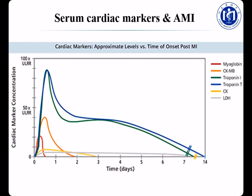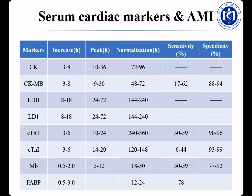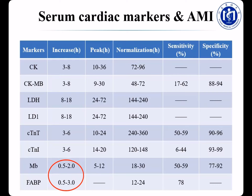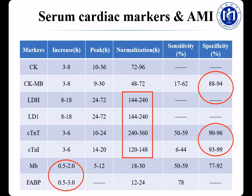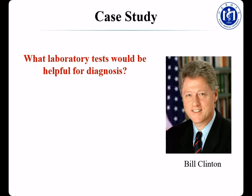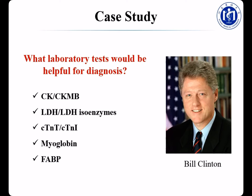For early diagnosis, markers that increase rapidly are used. From the figure, myoglobin rises first, so it can be used for early diagnosis of AMI. For late diagnosis, markers that persist longest are used — these are LDH and troponin T/I. This table lists the time for each marker to increase, reach the peak, and normalize. Myoglobin and FABP are the two markers that increase most rapidly, so they are used for early diagnosis. LDH and troponin T/I last the longest, so they can be used for late diagnosis. For definitive diagnosis, we consider specificity — CKMB, troponin T, and troponin I have relatively high specificity and are used for definitive diagnosis of AMI.